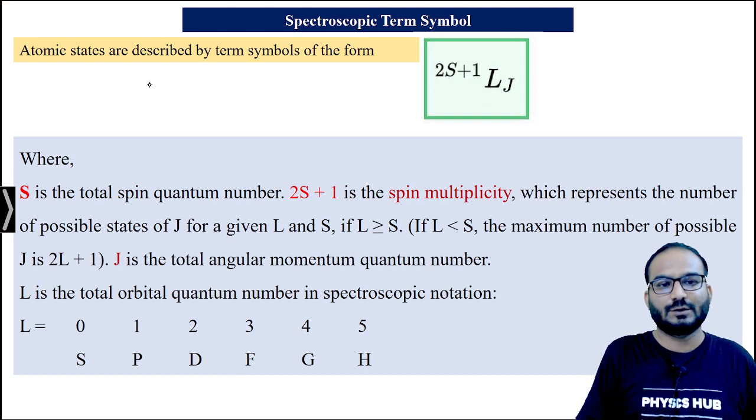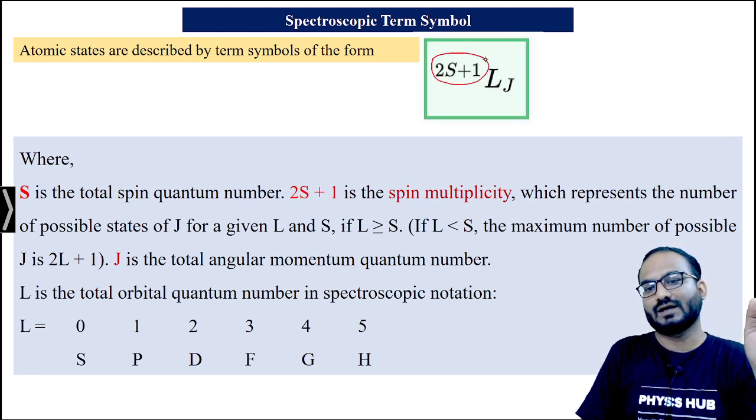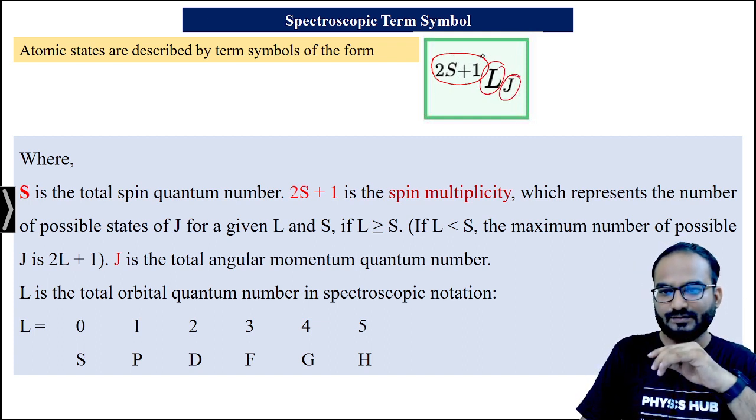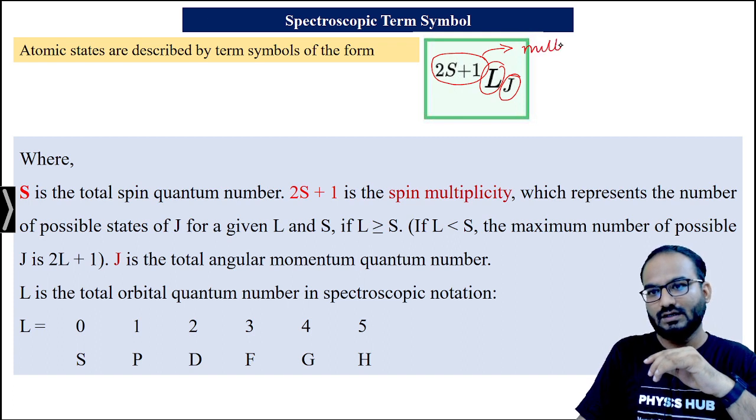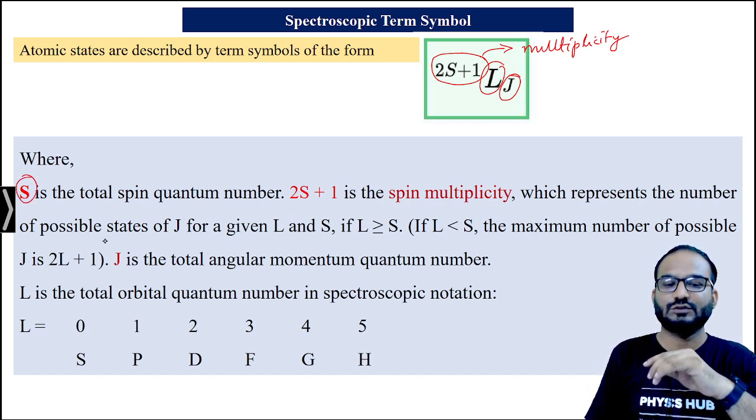Spectroscopic term symbol: atomic states are described by term symbols of the form 2S+1 LJ. 2S+1 is the multiplicity. S is the total spin quantum number which represents the number of possible states of J for a given L and S.